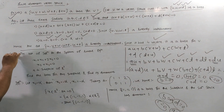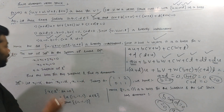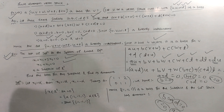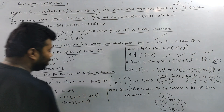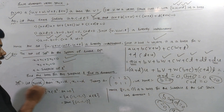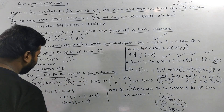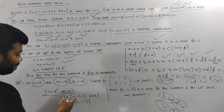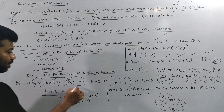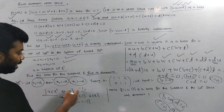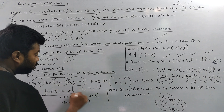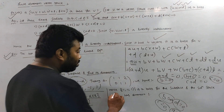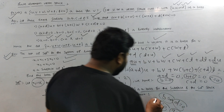The set of solutions of the system: x1 + 2x2 + 2x3 = 0 and x2 + x3 = 0 is a subspace of R^3. Find the basis and dimension. Let x3 = α and x2 = −α. Then x = α·(−1, −1, 1). Hence {(−1, −1, 1)} is a basis of the subspace, and the subspace has dimension 1.